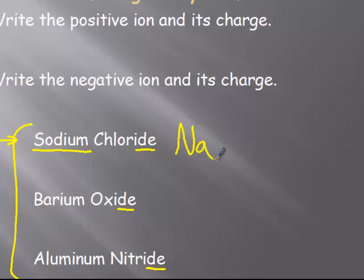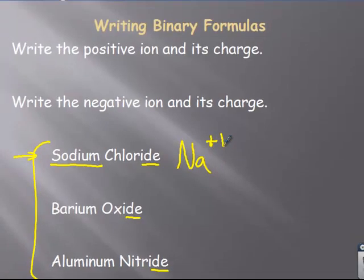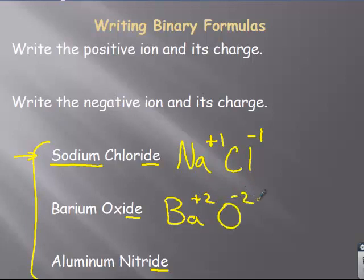So what I do is I write the positive ion symbol. And then in the upper right corner is where we put our charge. Negative ion and its charge. Barium plus two. Oxide. We're not going to find oxide on the periodic table, but we got oxygen. We're not going to have chloride on the periodic table, but we got chlorine. Last one, aluminum plus three. Nitrogen, not nitride, minus three. And so we started with simple examples.